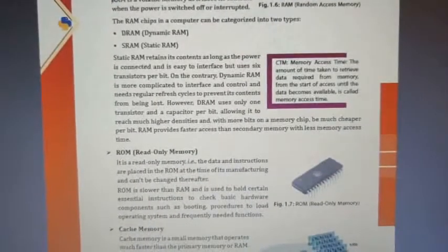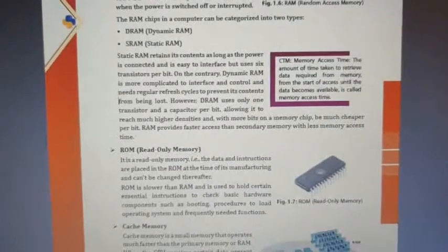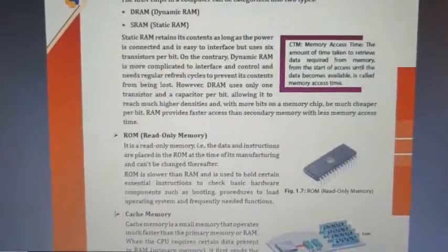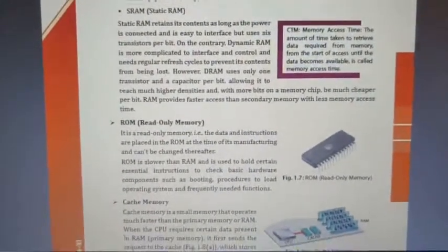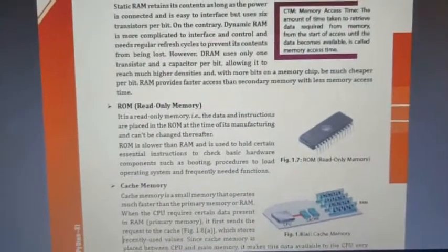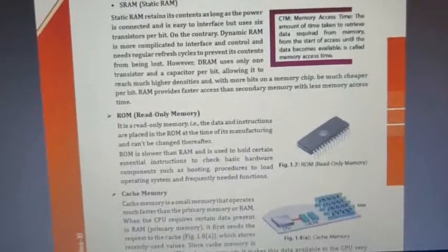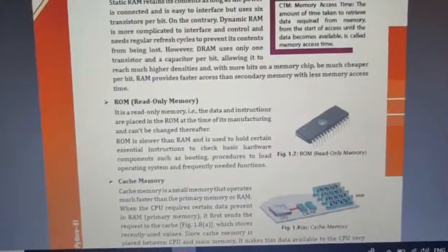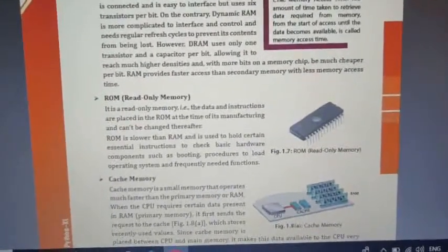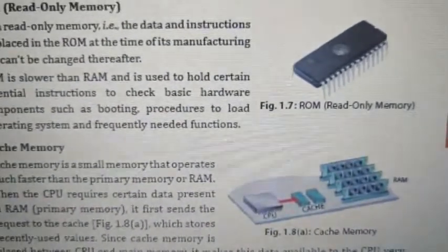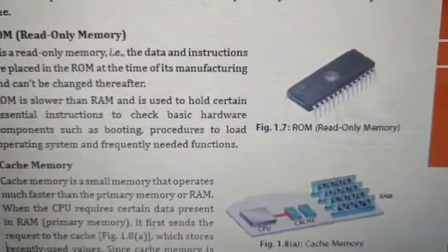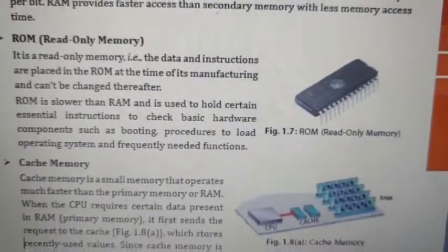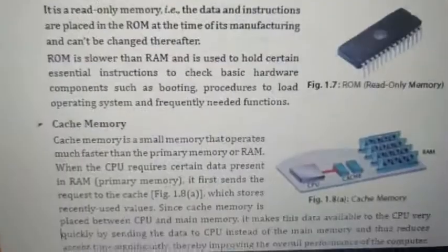Cache memory is a small memory that operates much faster than primary memory. When the CPU requires certain data present in RAM, it first sends the request to the cache, which stores recently used values. Since cache is placed between the CPU and main memory, it makes data available to the CPU quickly. Looking at the figure, here is the CPU, here is the cache, and here is the RAM.